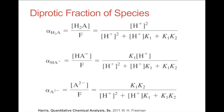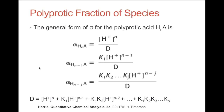These are the diprotic fractions of species in solution. F stands for the formal concentration, and that's how you calculate it. For each of the three species, the denominator is the same — it's the formal concentration each time. The same applies for the polyprotic fraction of species, just a little more complicated, where D is the formal concentration.